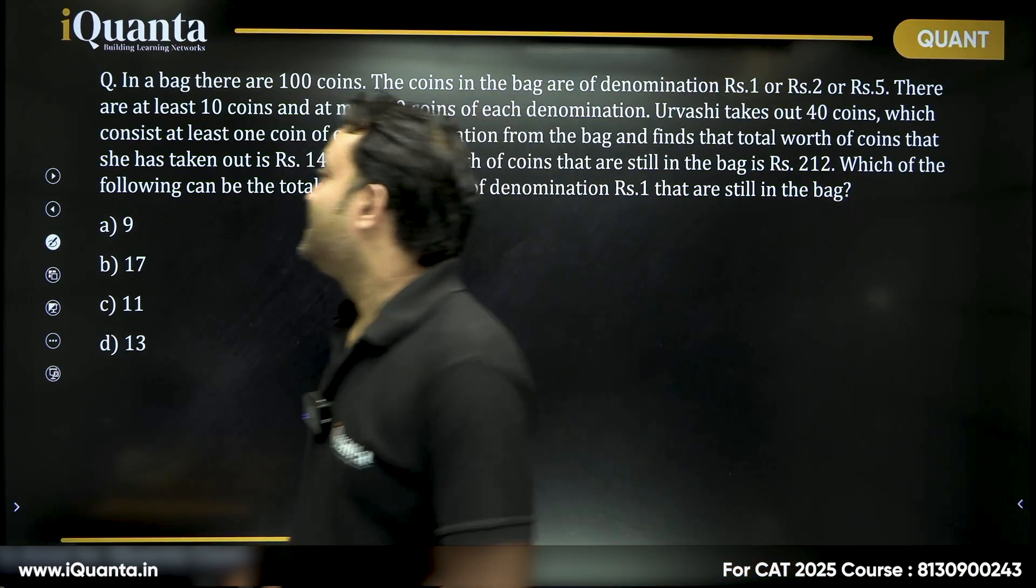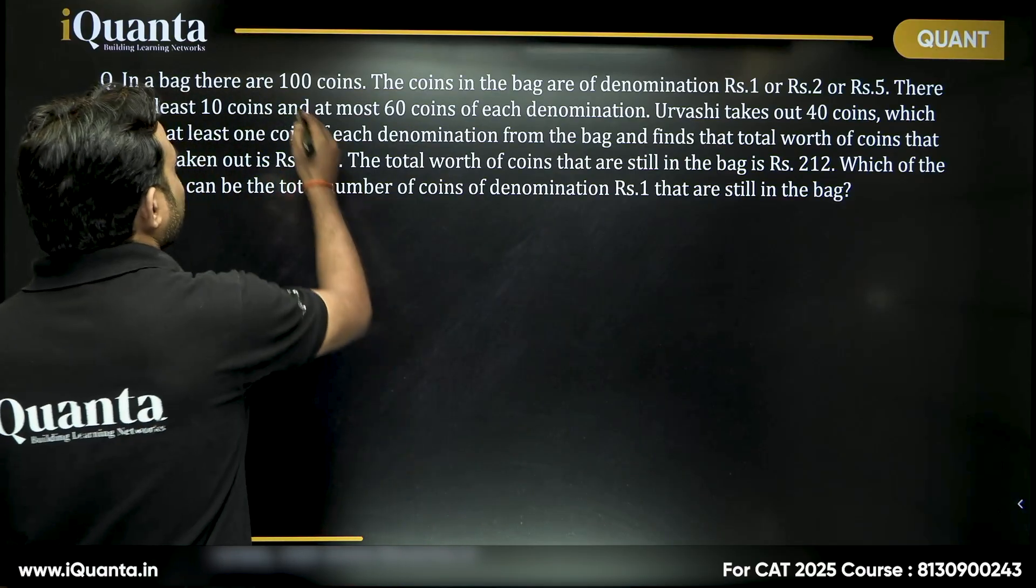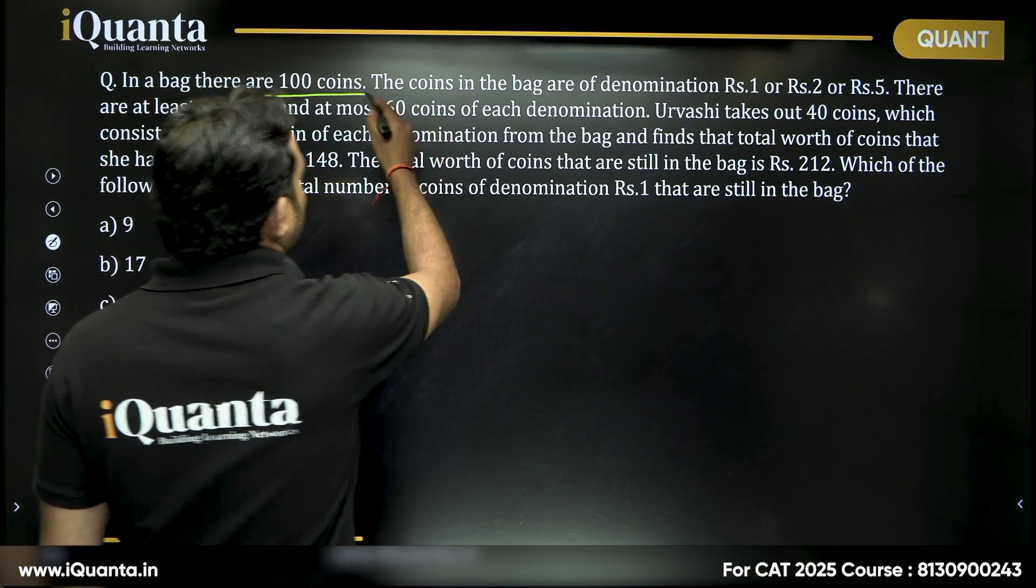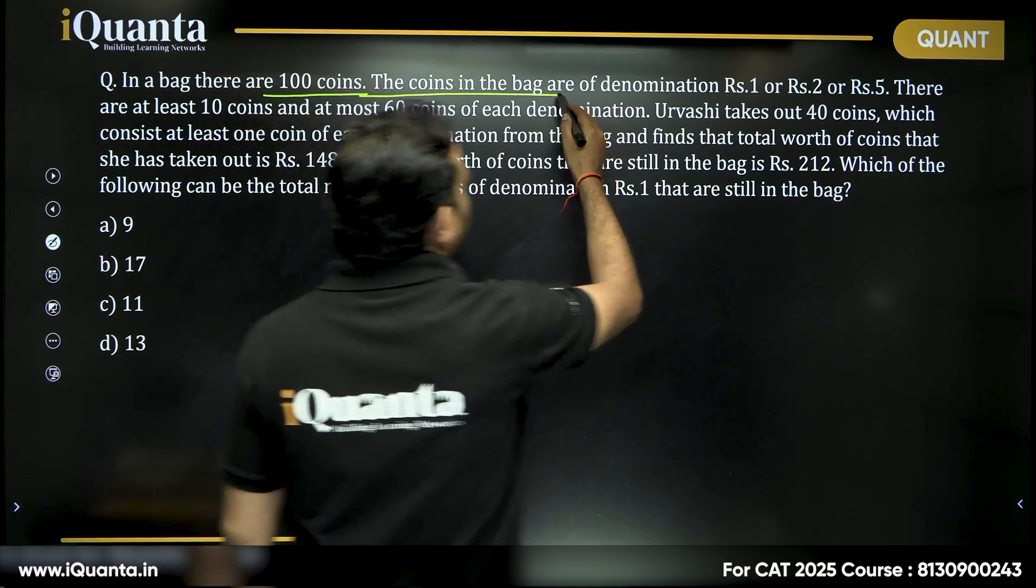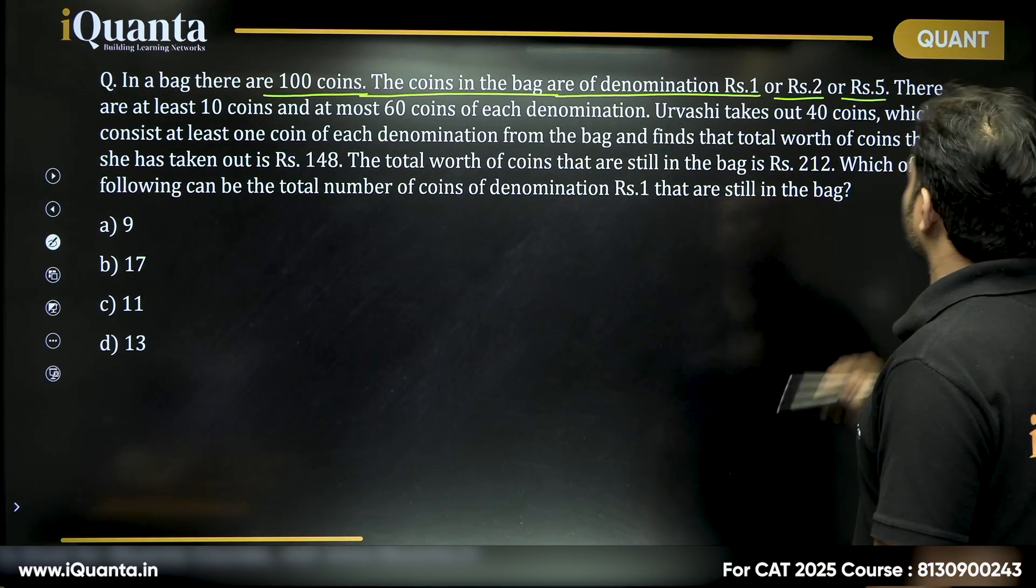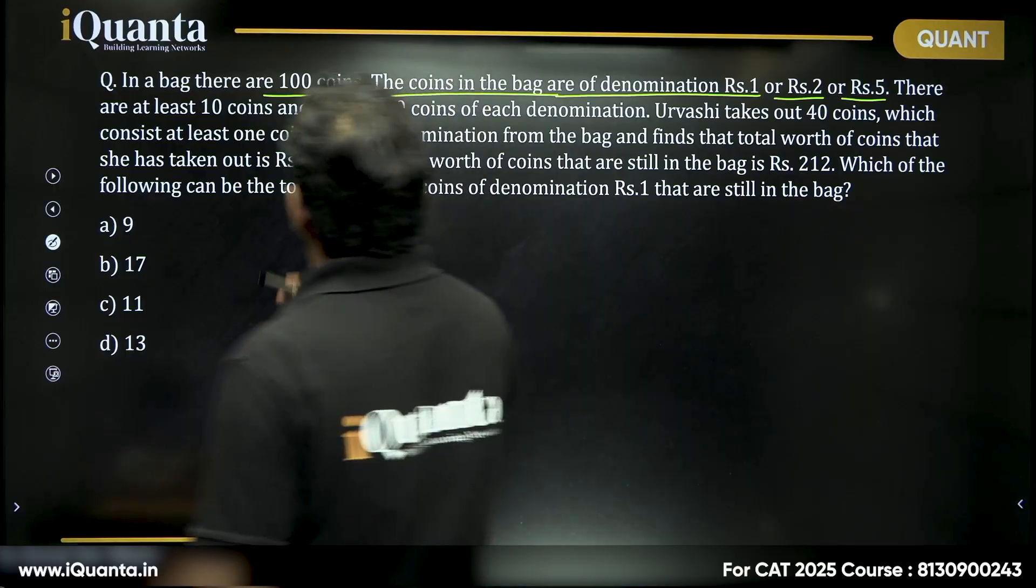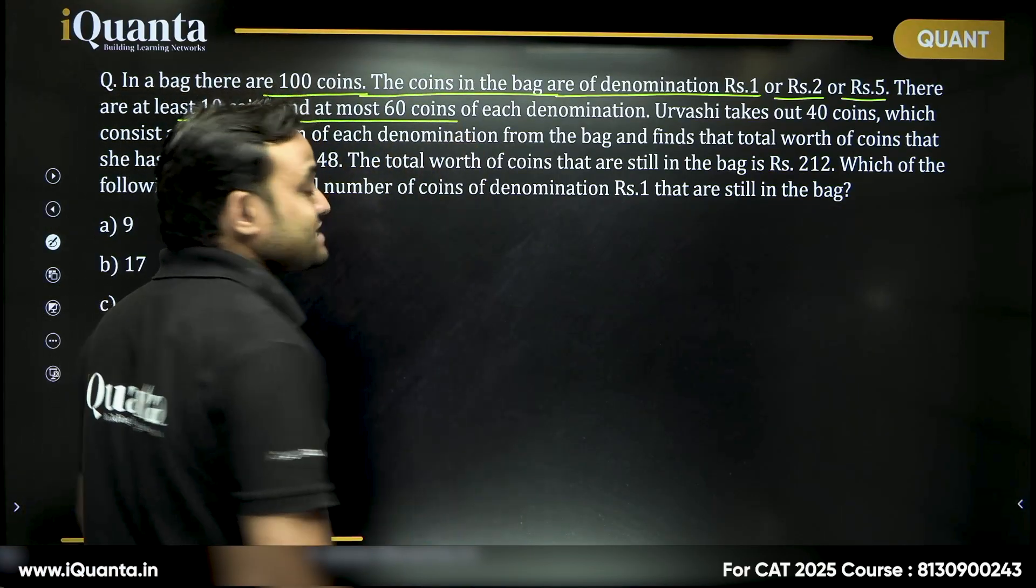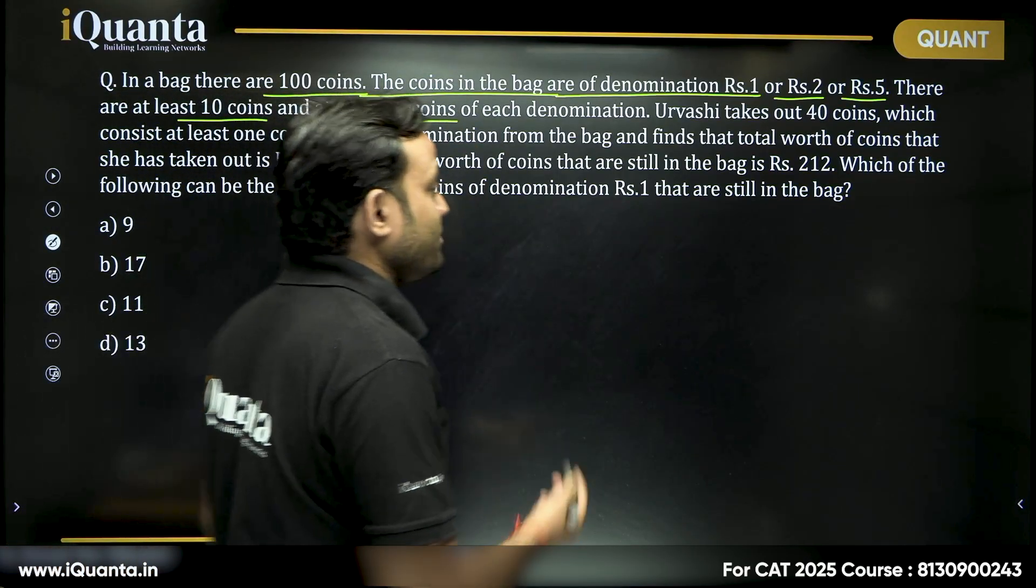Let us try this one. In a bag there are 100 coins. The coins in the bag are of denomination 1 rupees, 2 rupees or 5 rupees. There are at least 10 coins and at most 60 coins of each denomination.